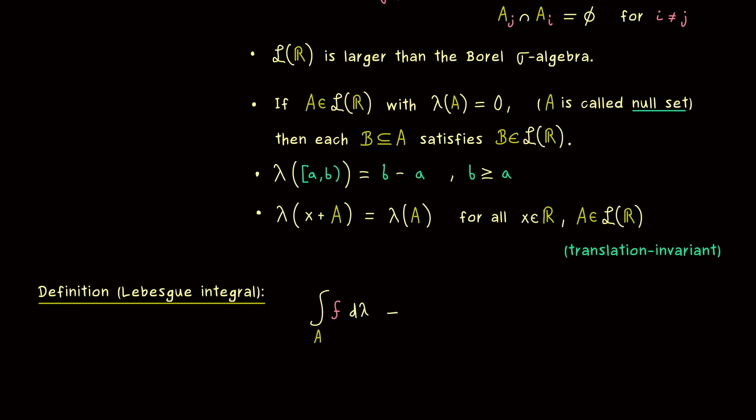And equivalently, you also see this notation, where we use a variable X inside. Which means we would write F of X d lambda X. Obviously that is what one uses in calculation, because then we don't need a name for the function. And since here we will always deal with the Lebesgue measure, we can also shorten the notation.